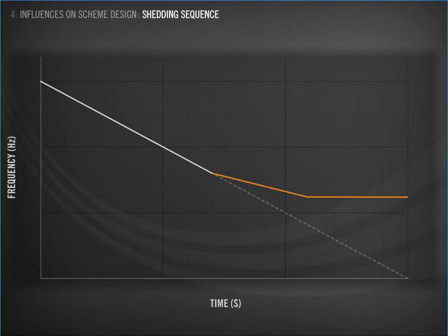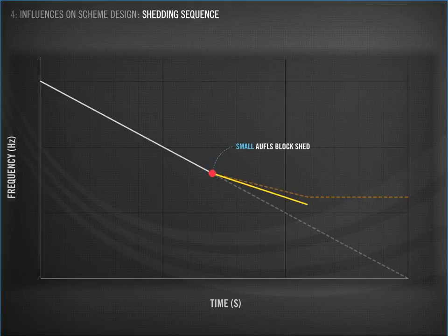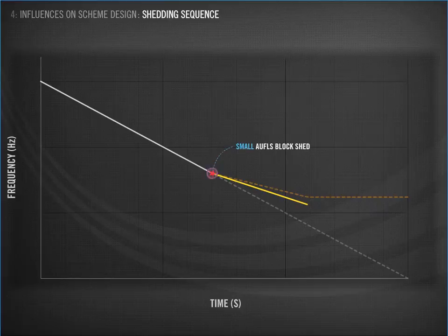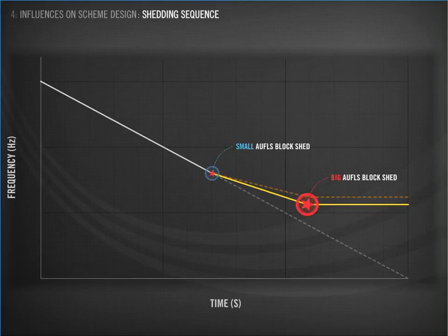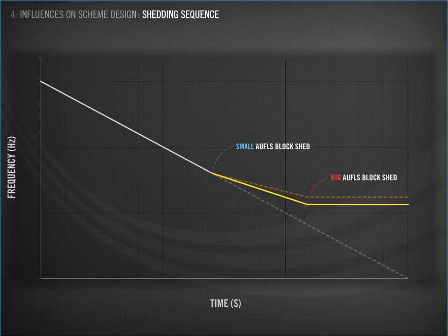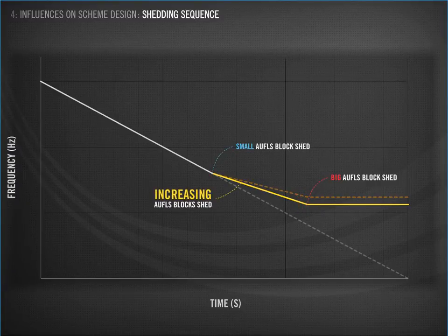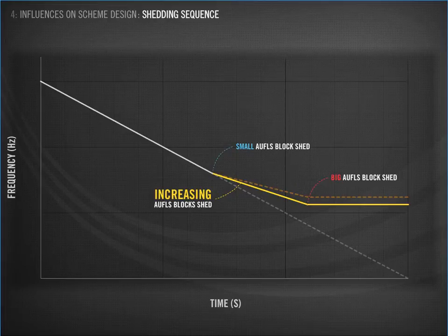In this second example, we start with a smaller AWFLS block. In other words, we lightly apply the brakes, and the frequency continues to fall at a faster rate than in our previous example. The frequency falls further before the second bigger block triggers. The frequency decline is arrested and the line levels out. We call this design an increasing scheme.